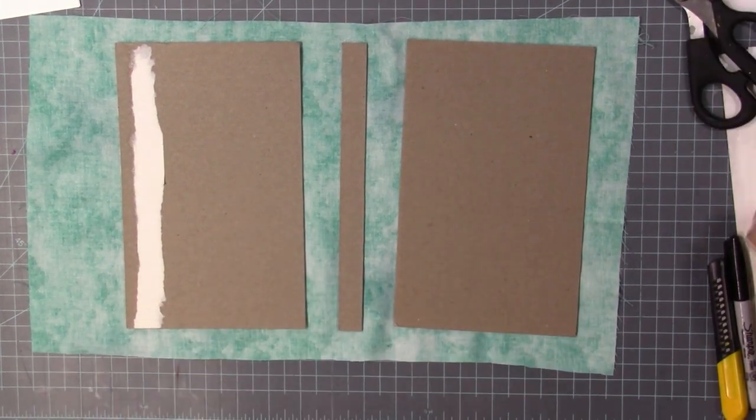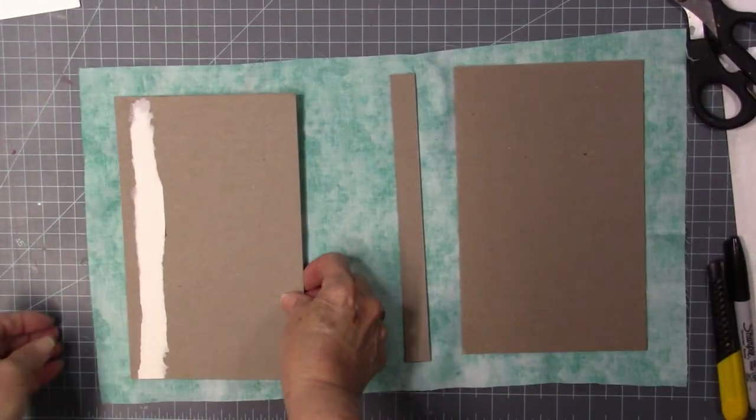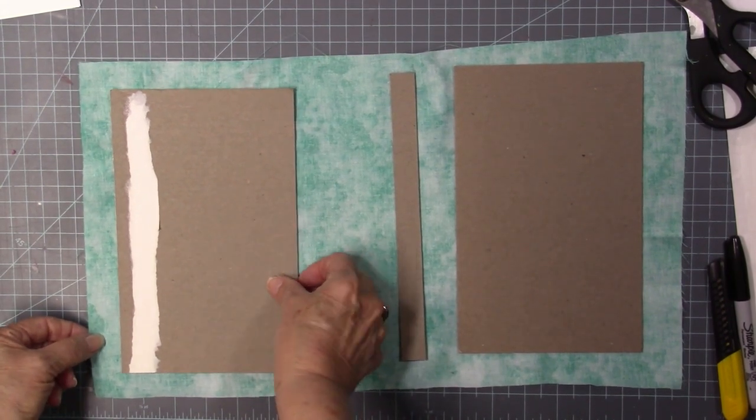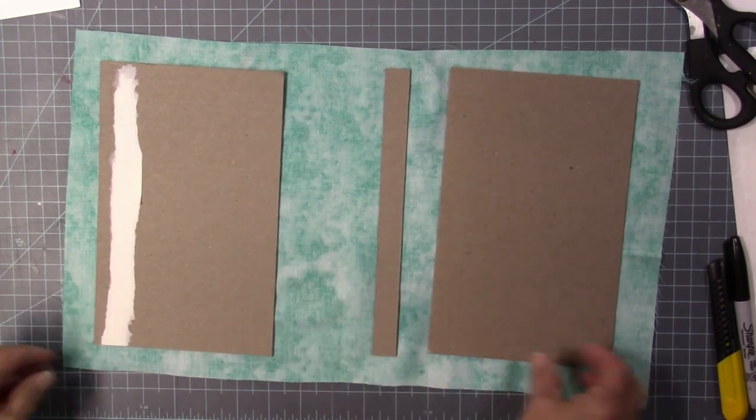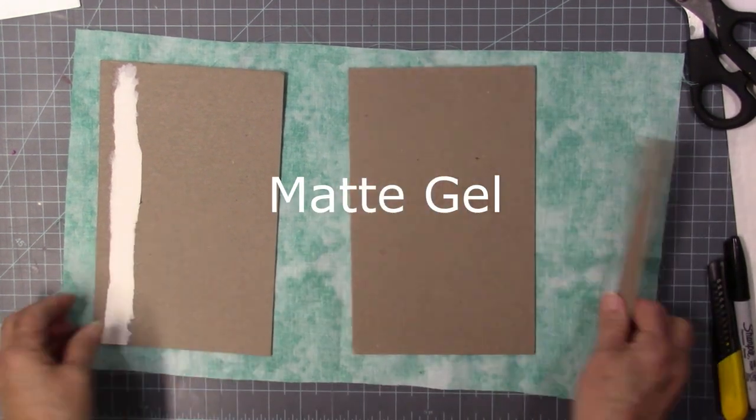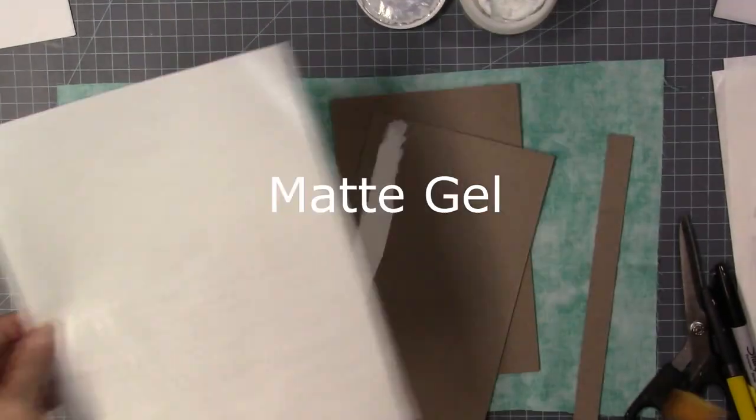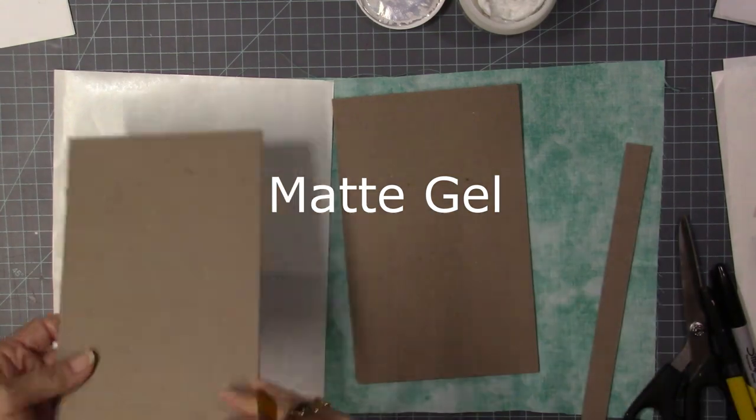So I bought a fat quarter from Walmart and I just cut it in half. I'm going to allow about an inch all the way around.